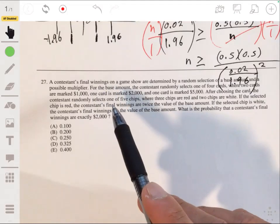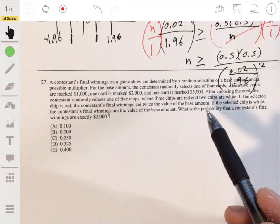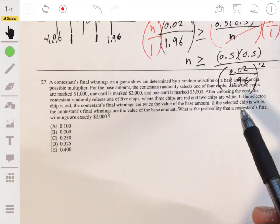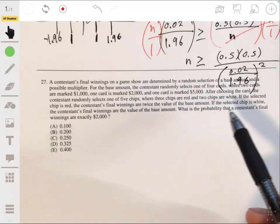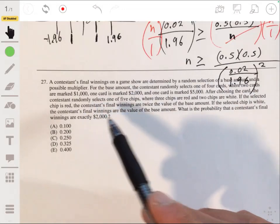where three chips are red and two chips are white. If the selected chip is red, the contestant's final winnings are twice the value of the base amount. If the selected chip is white, the contestant's final winnings are the value of the base amount. What is the probability that the contestant's final winnings are exactly $2000?